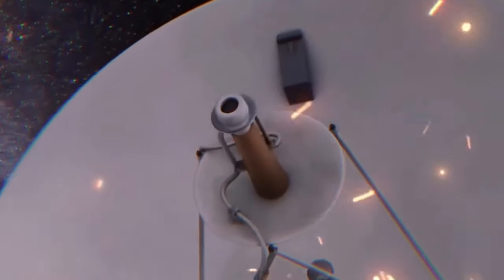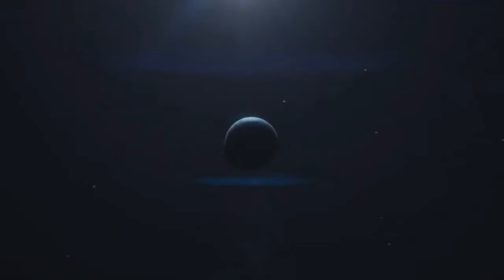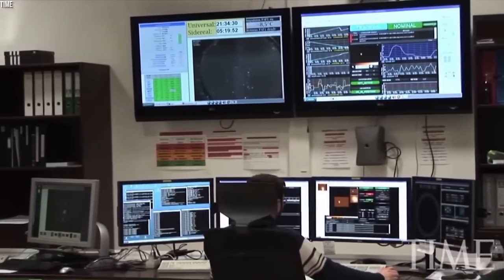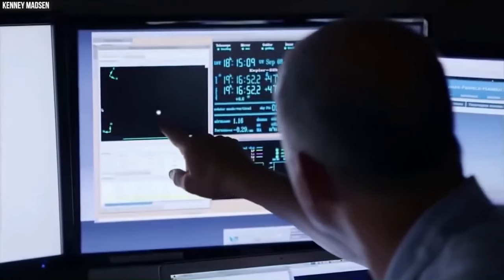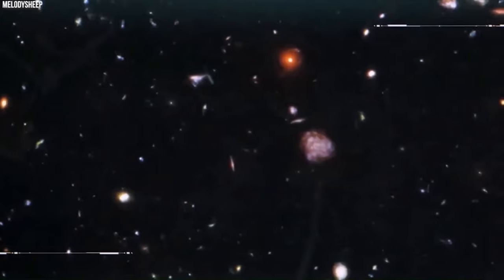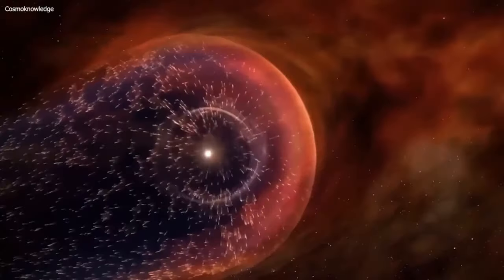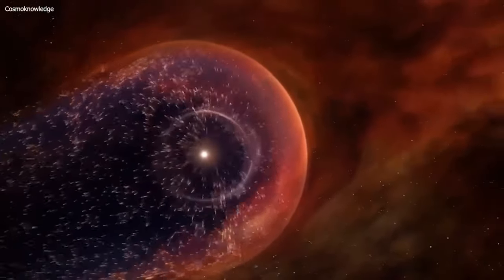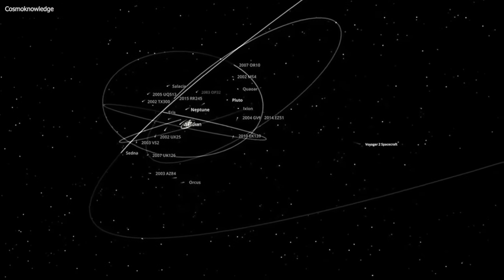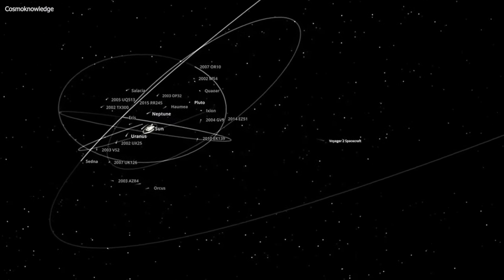However, the distance Voyager 1 has traveled means that direct communication with Earth has become increasingly challenging. To overcome this, the spacecraft is equipped with a digital tape recorder, DTR, capable of storing roughly 67 megabytes of data. This recorded data can then be sent back to Earth later when conditions for communication are more favorable. As of 2023, it takes over 22 hours for signals from Voyager 1 to reach Earth, which is a stark contrast to the roughly 15 minutes it takes for the Mars rovers to transmit data back to us.